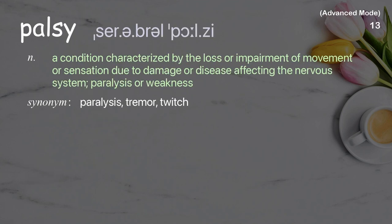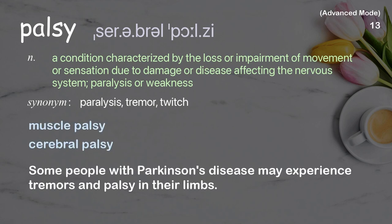Palsy: A condition characterized by the loss or impairment of movement or sensation due to damage or disease affecting the nervous system; paralysis or weakness. Examples: Muscle palsy. Cerebral palsy. Some people with Parkinson's disease may experience tremors and palsy in their limbs.